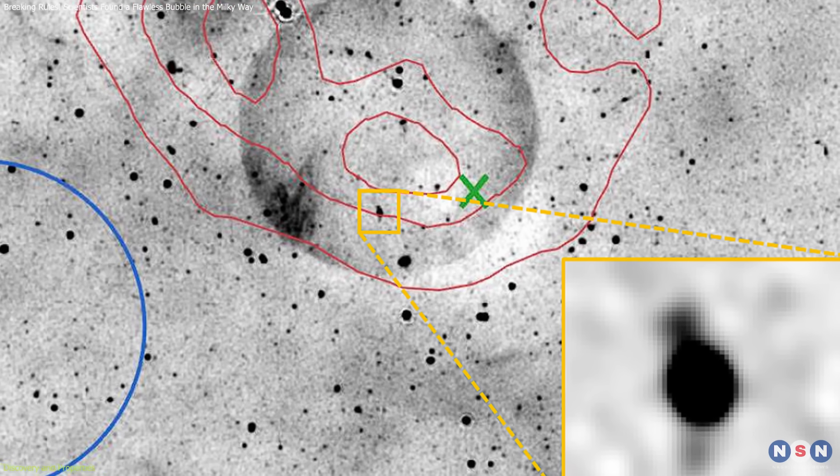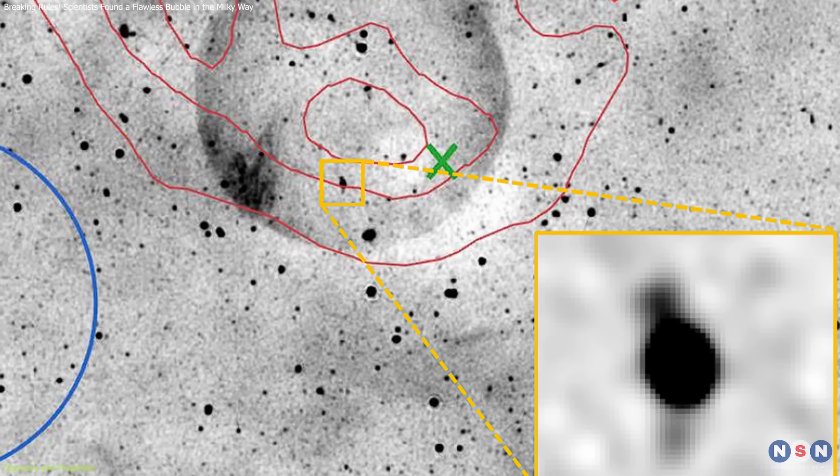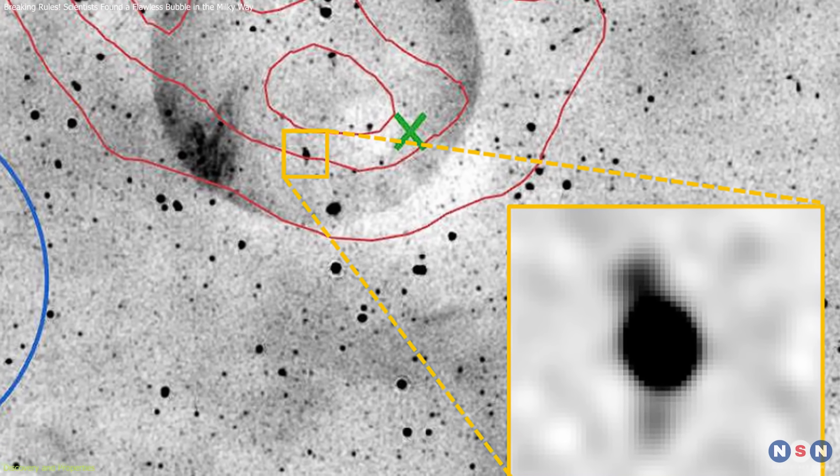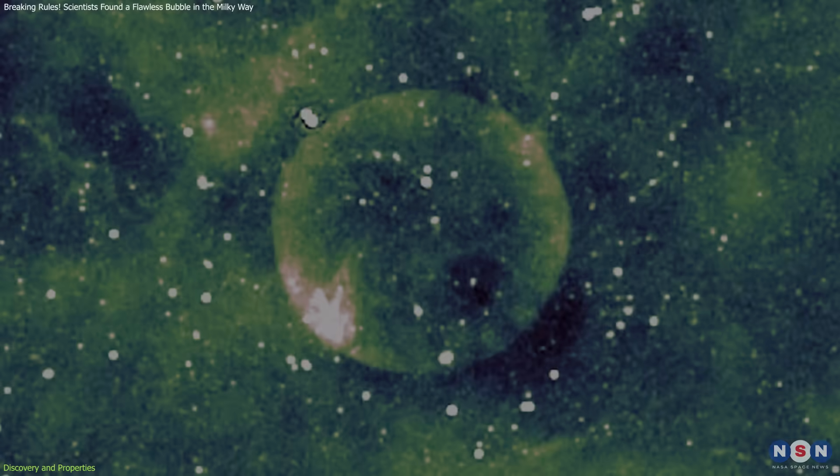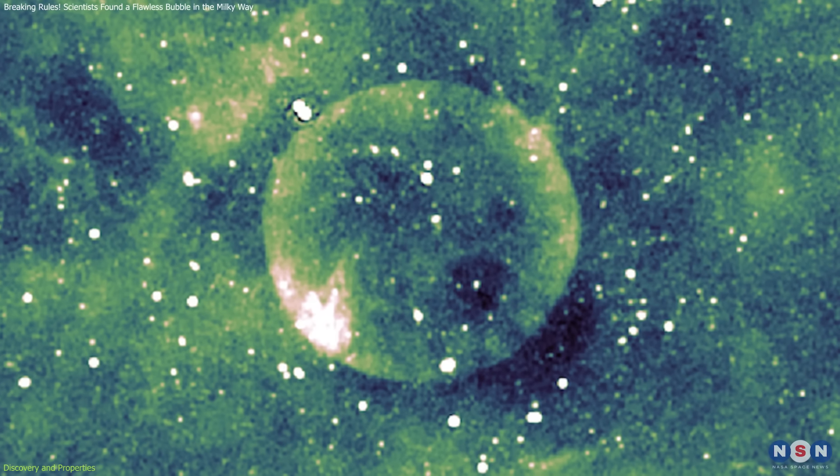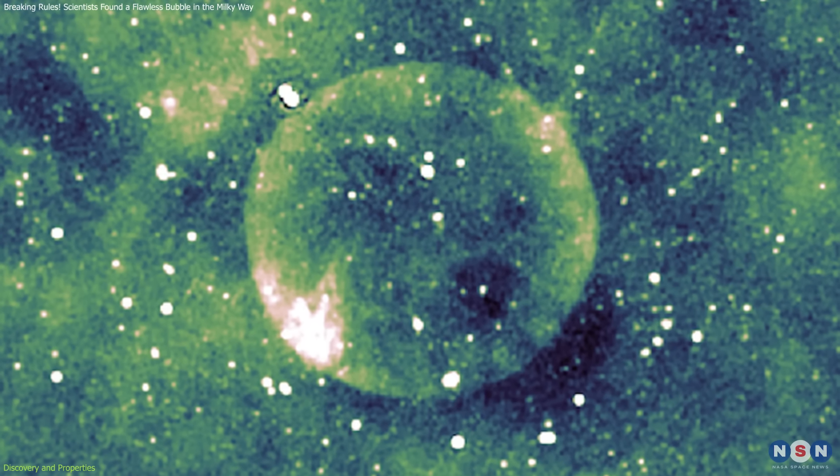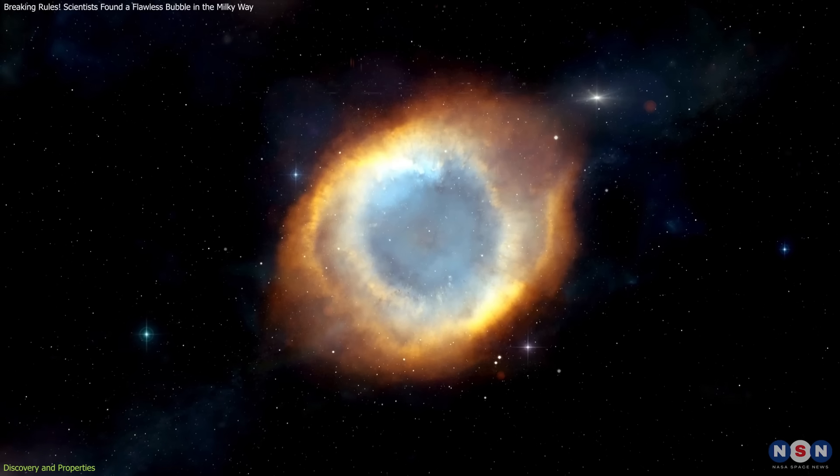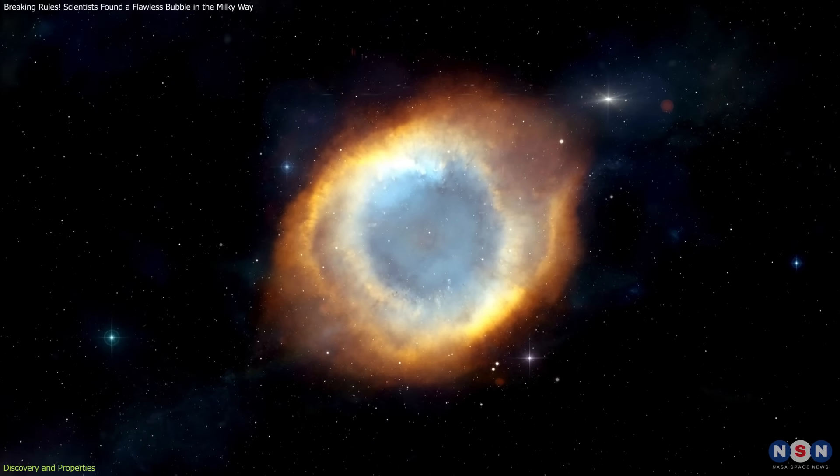But Teleos' edges remain remarkably consistent, with no clear signs of interference or warping. Its spherical structure is so precise that some astronomers have compared it to a teaching model, an idealized version of how a remnant should look in a vacuum.